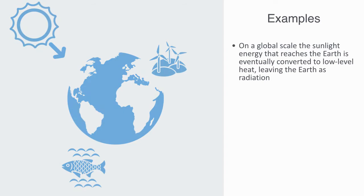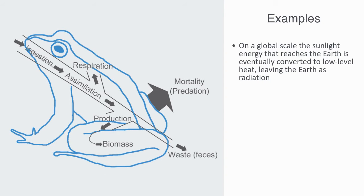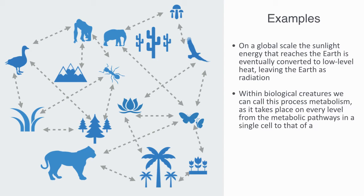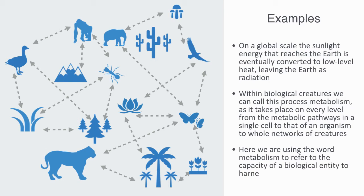On a biotic level, all biological creatures are driven by the energy gradient between the resources they consume and the entropy they export. Within biological creatures, we can call this process metabolism, as it takes place on every level — from the metabolic pathways in a single cell, to that of an organism, to whole networks of creatures that form part of macro-level metabolic networks processing energy and resources through the whole ecosystem. Here, we're referring to metabolism to mean the capacity of a biological entity to harness and process free energy.